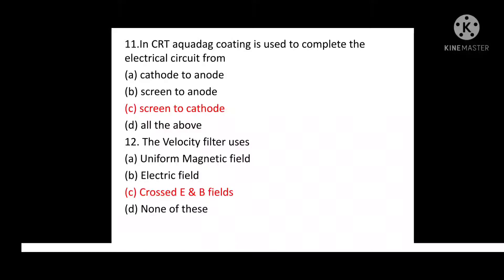Question No. 12: The velocity filter uses? Option A: Uniform magnetic field. Option B: Electric field. Option C: Crossed E and B field. Option D: None of these. Correct answer is: Crossed E and B field.